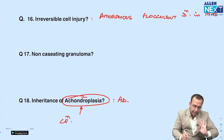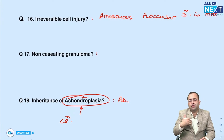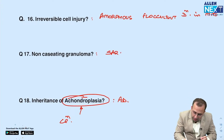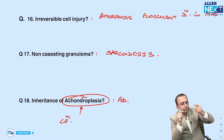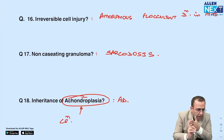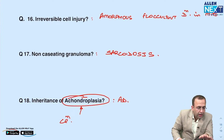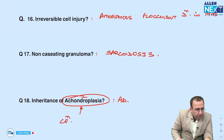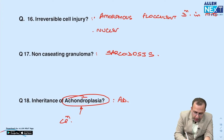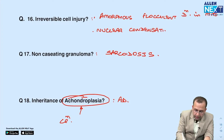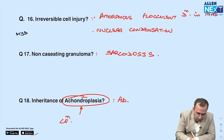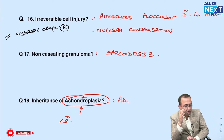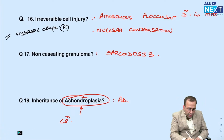Non-caseating granulomas with bilateral hilar lymphadenopathy — this is sarcoidosis. So there were two questions on sarcoidosis: asteroid bodies and non-caseating granulomas. For irreversible vs reversible cell injury: amorphous flocculent densities in mitochondria indicate irreversible injury; hydropic change is reversible cell injury. Nuclear condensation — that is pyknosis, karyorrhexis, karyolysis — is also irreversible.